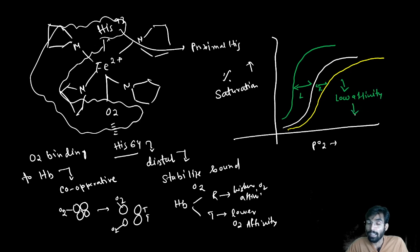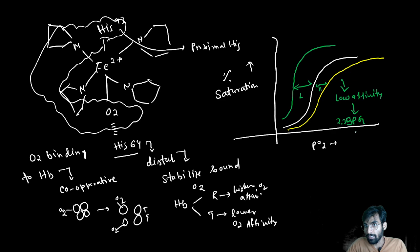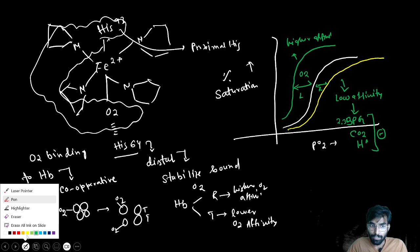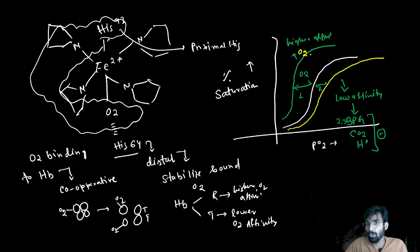Since hemoglobin is allosterically regulated, the right shift (lower affinity) is caused by negative allosteric regulators: 2,3-BPG, CO2, and H+. The left shift (higher affinity) is caused by O2 as a positive allosteric regulator. Higher affinity means oxygen loading; lower affinity means oxygen unloading.